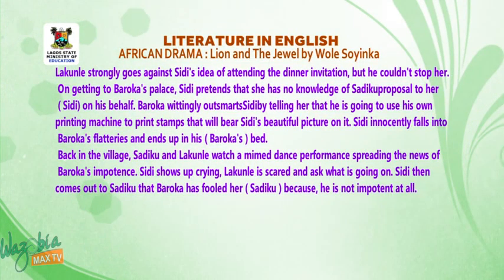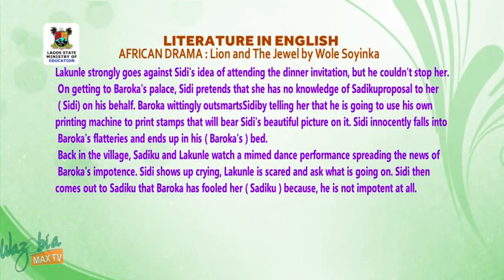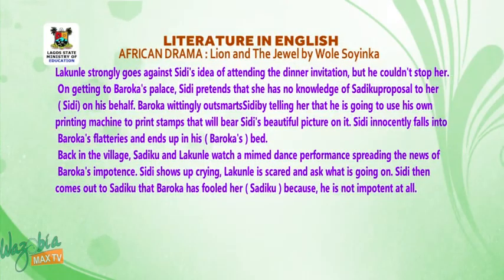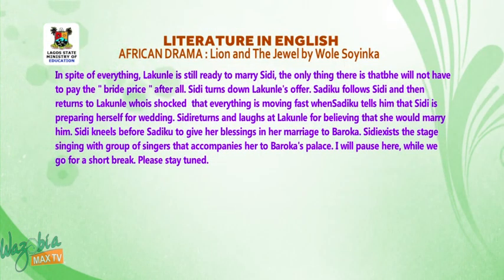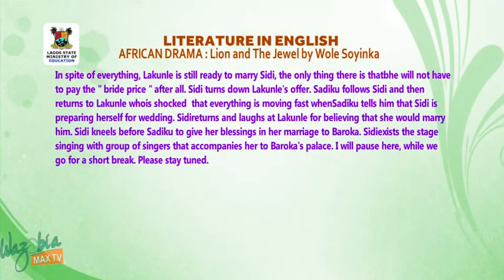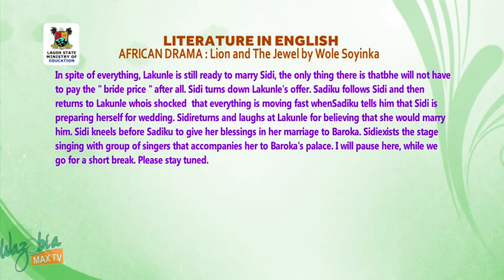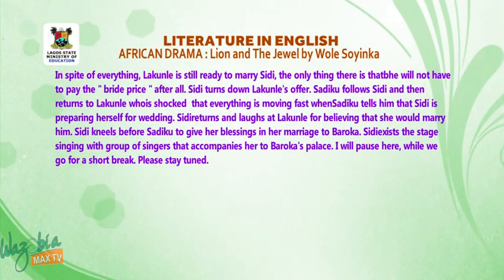Baroka wittingly seduces Sidi by telling her that he is going to use his own printing machine to print a stamp that will bear her beautiful picture on it. Sidi innocently falls into Baroka's trap and ends up in Baroka's bed. Back in the village, Sadiku and Lakunle watch a mime dance performance spreading news of Baroka's impotence. Sidi shows up crying. She reveals to Sadiku that Baroka had fooled her, because he is not impotent at all. Despite everything, Lakunle is still ready to marry Sidi — the only benefit being that he will not have to pay bride price. Sidi turns down Lakunle's offer. She kneels before Sadiku to receive her blessing, then exits singing with a group of singers accompanying her to Baroka's palace.